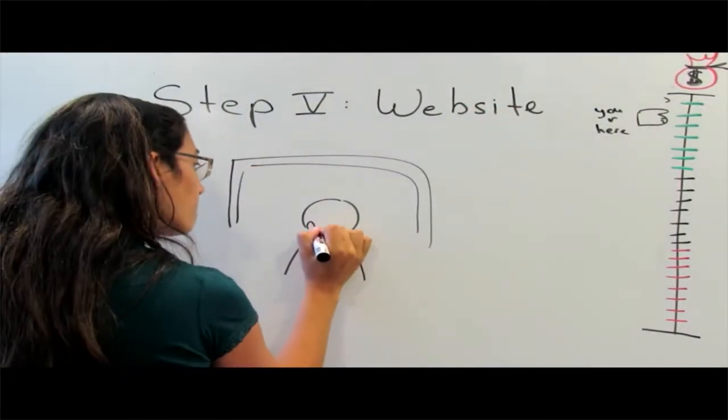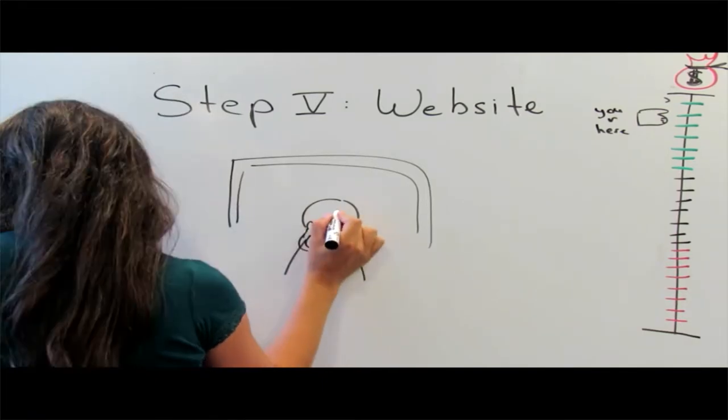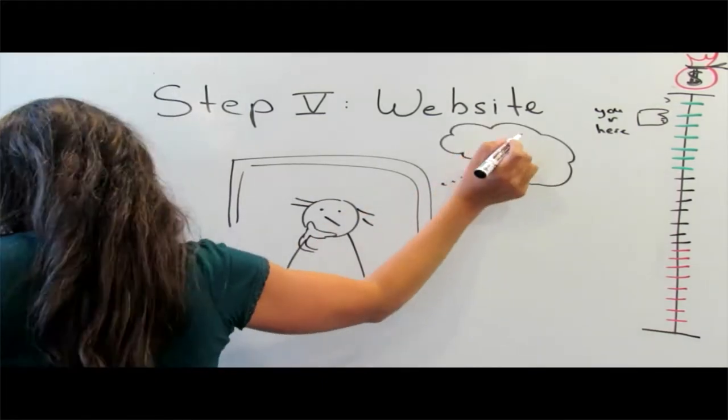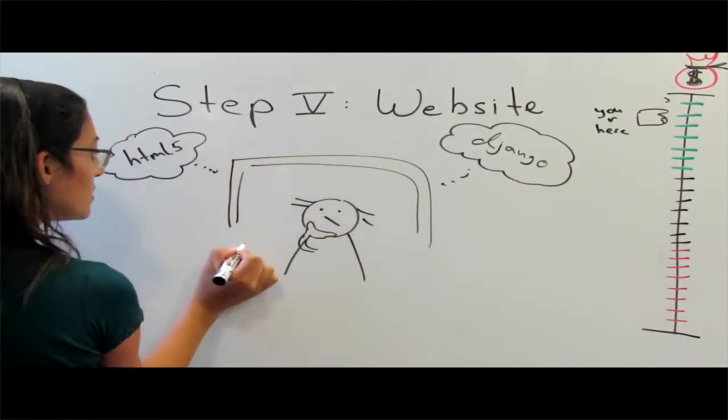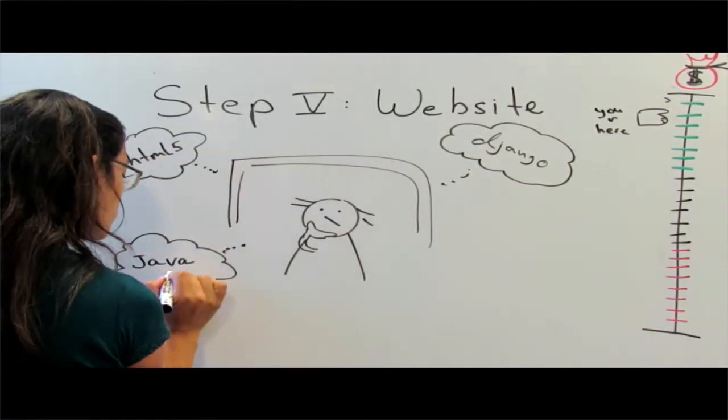Step 5. Website. Oh, this is an easy one, right? Actually, what should we use? Jekyll. HTML5. JavaScript. Drupal. Let's just use them all.